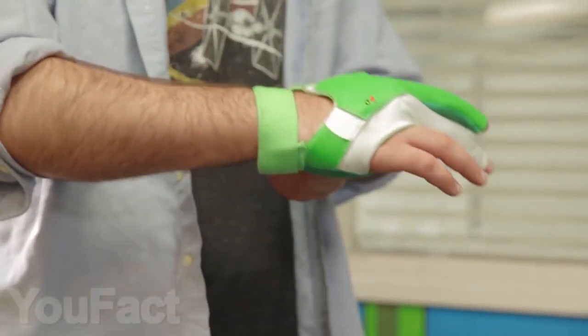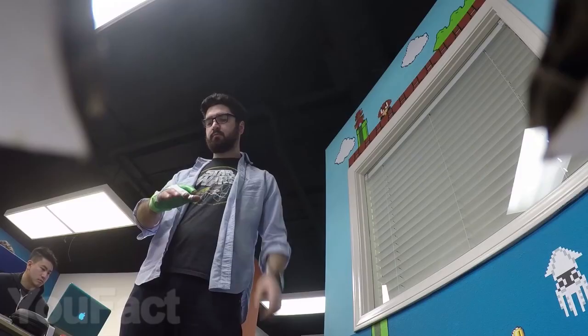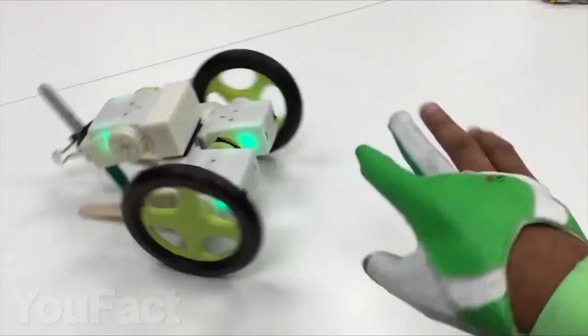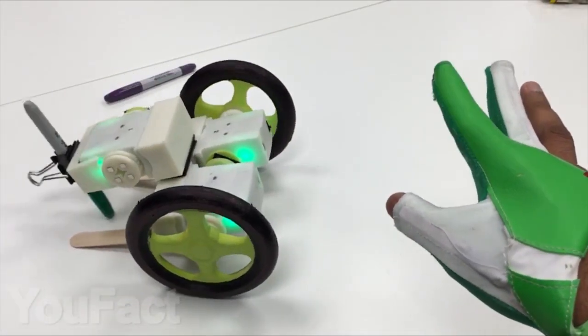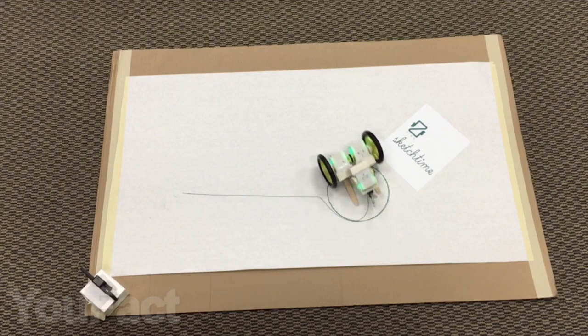You can control such a robot by using gestures, thanks to the special glove on the hand. There are the sensors of bending and gyroscope. Using them, the device defines various users' gestures.